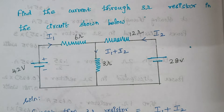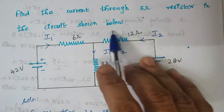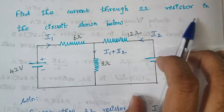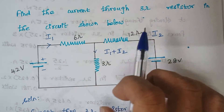Hello viewers, I am Kausalya. Today we are going to solve a problem related to Kirchhoff's voltage law, and the problem is: find the current through the 3 ohm resistor in the circuit shown below.